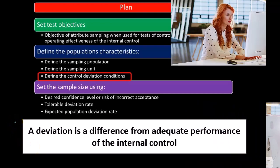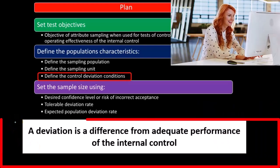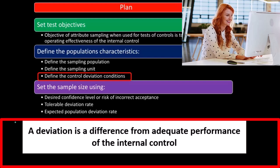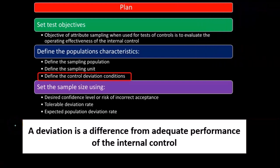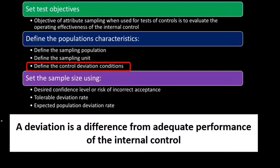To define the control deviation condition, a deviation is a difference from the adequate performance of the internal control. So if we were to look at a document expecting some initial that would indicate the verification, and we don't find that, then that would be the deviation.